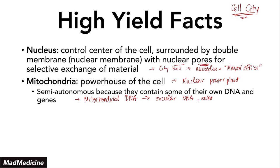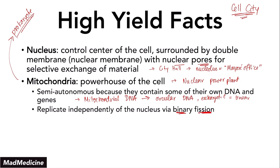You can pretty much guess that a mitochondria at some point was a prokaryote that was engulfed inside of our cells. Another thing that supports this theory is that the mitochondria replicates independently of the nucleus — it replicates via binary fission, just like prokaryotes. This further supports the theory that the mitochondria was once a prokaryote that was engulfed by the cell and is now just hanging out in our cells.